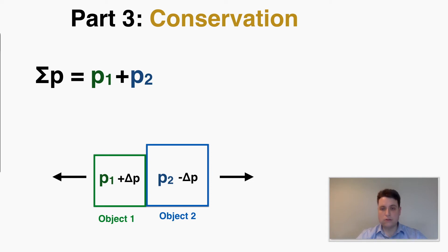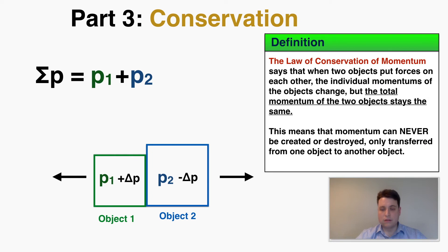This leads to a new definition: the law of conservation of momentum. The law of conservation of momentum says that when two objects put forces on each other, the individual momentums of the objects change, but the total momentum of the two objects stays the same. This happens every single time two objects interact — the two individual momentums can change, but their sum stays exactly the same.